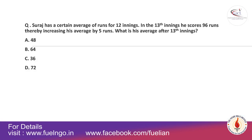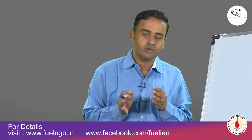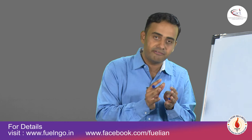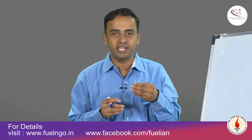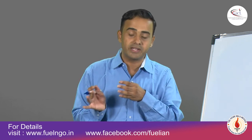Suraj has a certain average of runs for 12 innings. In the 13th inning, he scores 96 runs and his average increases by 5 runs. What is his average after the 13th inning? This can be solved without complex algebra: for the first 12 innings the average was X, then in the 13th inning he scored 96, giving 12X + 96 for the total.